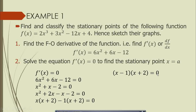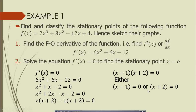Setting this equal to zero means either x - 1 = 0 or x + 2 = 0. If x - 1 = 0, then x = 1. If x + 2 = 0, then x = -2. So x = 1 or x = -2. We now have two x-coordinates, indicating we will have two stationary points.